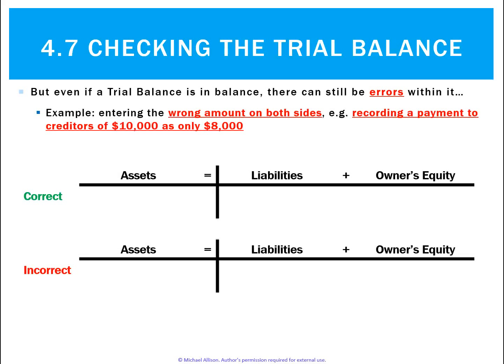Let's assume you entered the wrong amount on both sides — the wrong amount on the debit side and the wrong amount on the credit side. For example, you recorded a payment to creditors which was meant to be $10,000 but you only recorded it as $8,000. You should have decreased cash by $10,000 and creditors by $10,000, but incorrectly you decreased both by only $8,000. So that will still balance, but it's going to be incorrect.